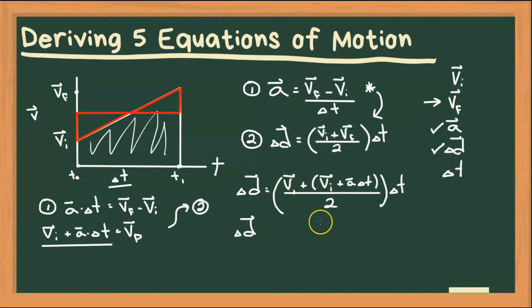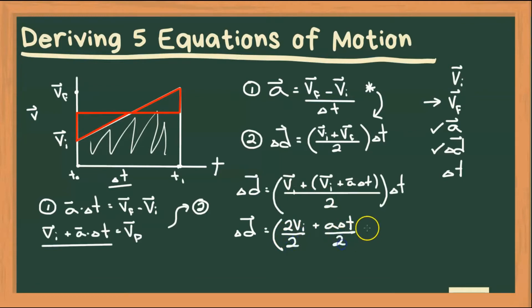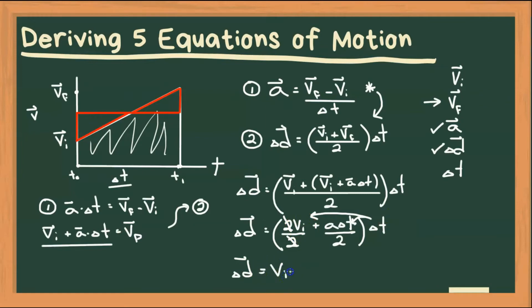So here's equation two: delta D is equal to initial velocity plus final velocity — but final velocity I'm going to substitute as Vi plus a delta T — all divided by two, and all multiplied by time. Now we have like terms, Vi and Vi, so that gives us two Vi, plus a delta T, all over two. I'm going to separate the two for each term, and distribute time into the brackets, multiplying both terms by time. This gives us delta D is equal to Vi times time, plus one half times a times time squared. And this is the third equation — notice it is the one that is missing final velocity.